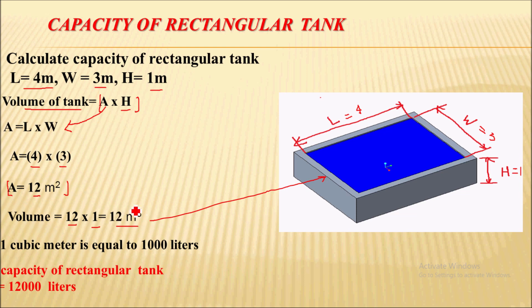Now we can convert this 12 meter cube into liter. So 1 cubic meter is equal to 1000 liter. So 12 meter cube will become 12,000 liter. So in liter we will get this value that is 12,000 liter is the capacity of this rectangular tank.